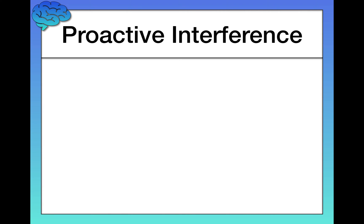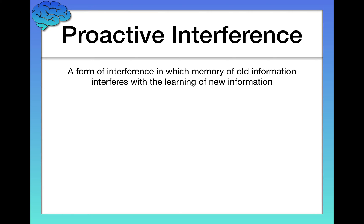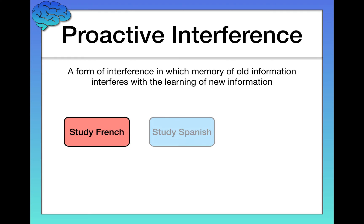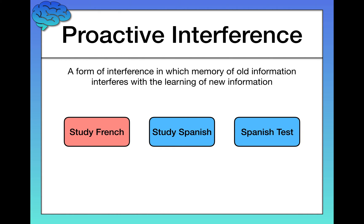Proactive interference works very similarly but in the opposite direction. It's a form of interference in which memory of old information interferes with the learning of new information. Say you study French first to avoid retroactive interference, then study Spanish for your Spanish test — but you bomb that too. What might have happened is that the old French information kept coming up while you were trying to learn Spanish, so when it came time for the test, you didn't know the Spanish material quite as well.